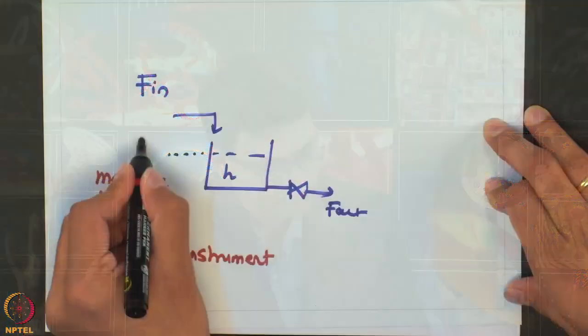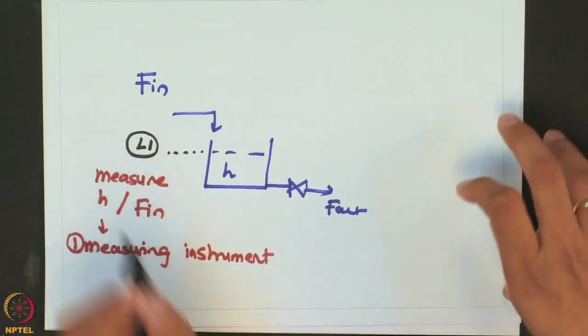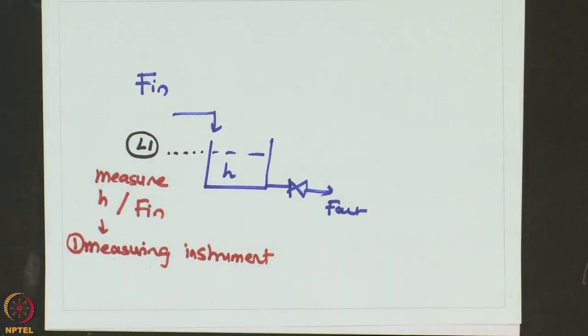For this case, let me just show you what happens if we measure the control variable. This is a level indicator which will measure the height.